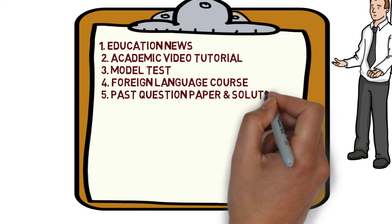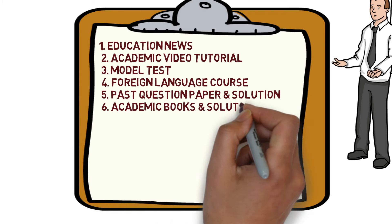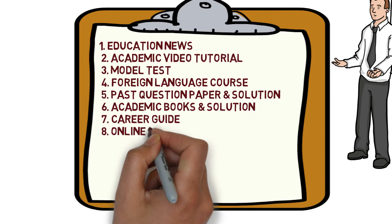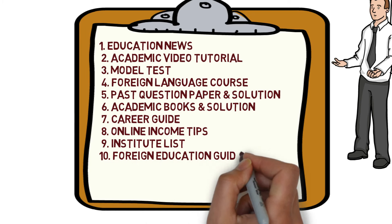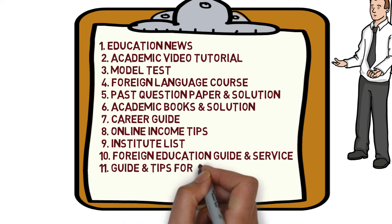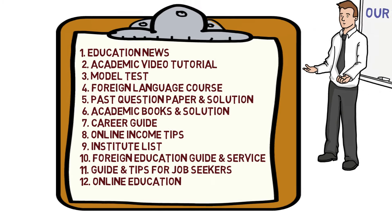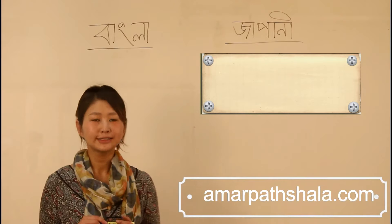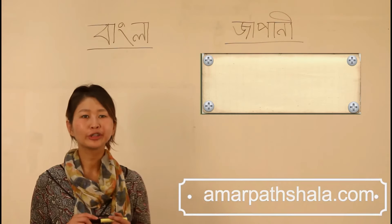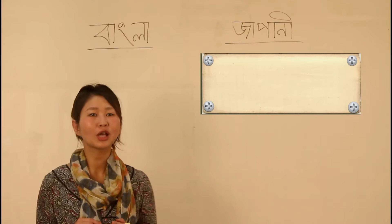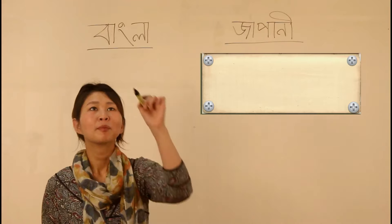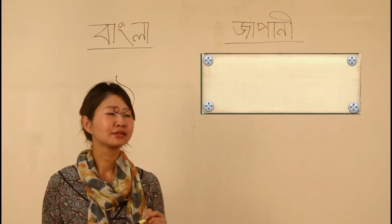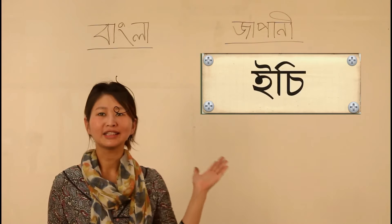Thank you for joining us. Let's start today's lesson. Today we are going to learn how to count numbers. Are you ready? Here we are going to learn how to count numbers. In Japanese, 1 is ichi.